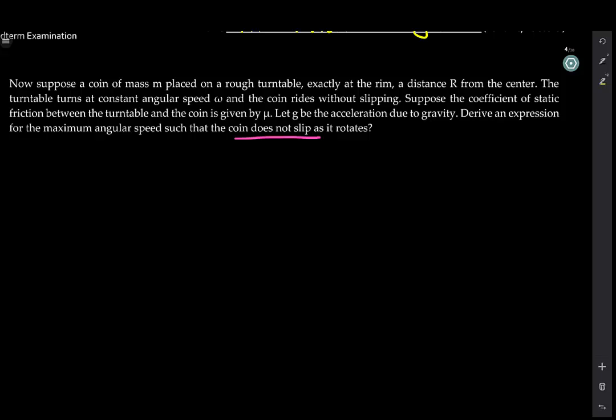The next question actually goes as follows. Suppose a coin of mass M placed on a rough turntable exactly at the rim, a distance R from the center. The turntable turns at constant angular speed omega, and the coin rides without slipping. Suppose the coefficient of static friction between the turntable and the coin is given by μ. Let G be the acceleration due to gravity. Derive an expression for the maximum angular speed such that the coin does not slip as it rotates.